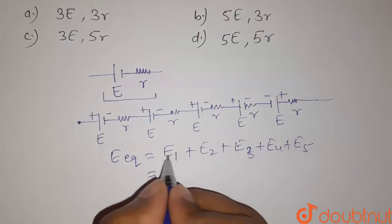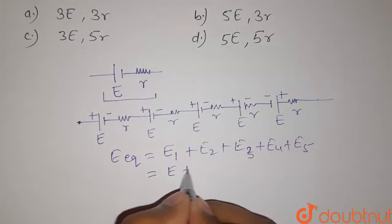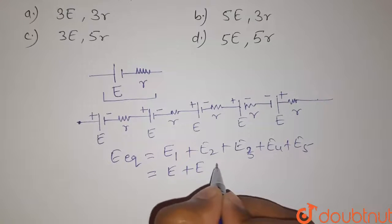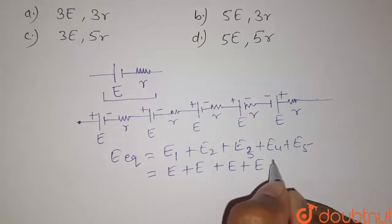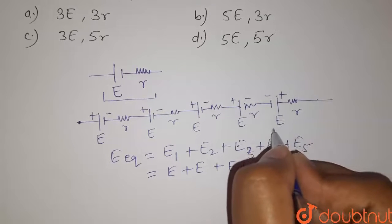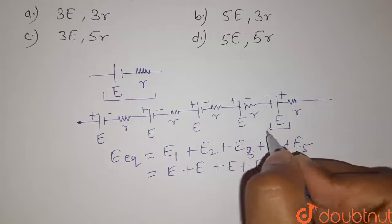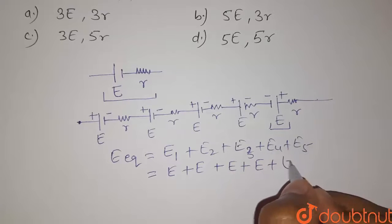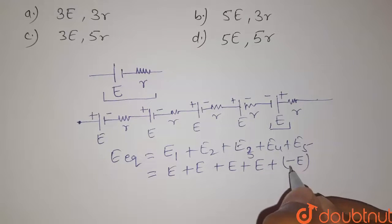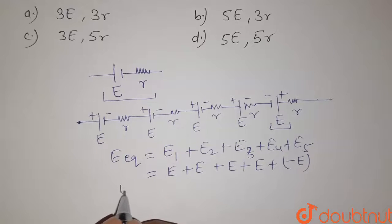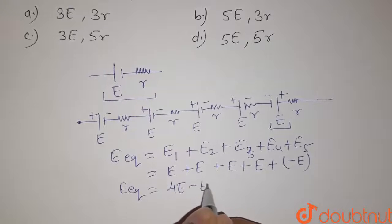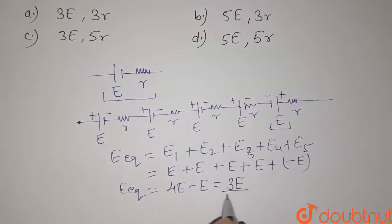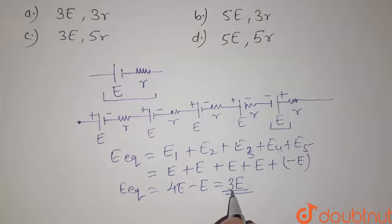Now here the value of E1 is E plus the value of E2 is also E plus the value of E3 is also E and E4 also has the value E. But E5 is connected in reverse order. That means its EMF value is given by minus E. So the equivalent EMF will be equals to 4E minus E and that will be equals to 3E. So this is the resultant EMF of the cell.